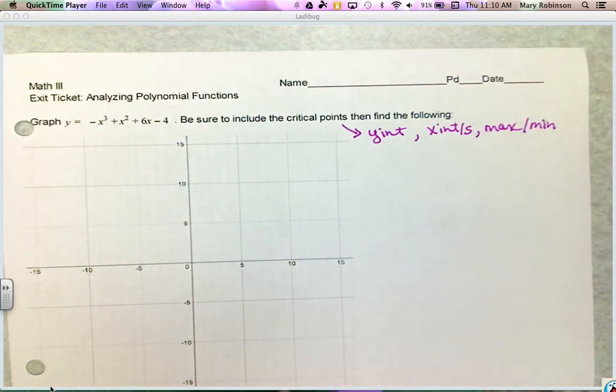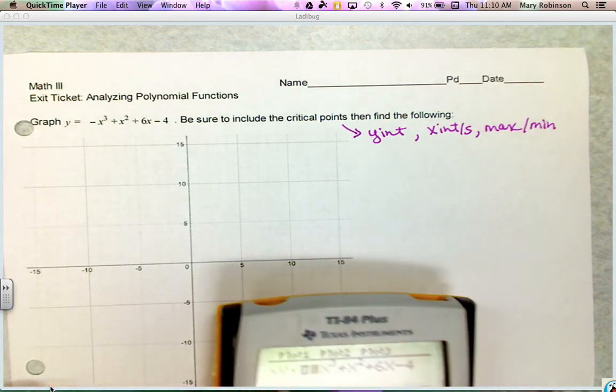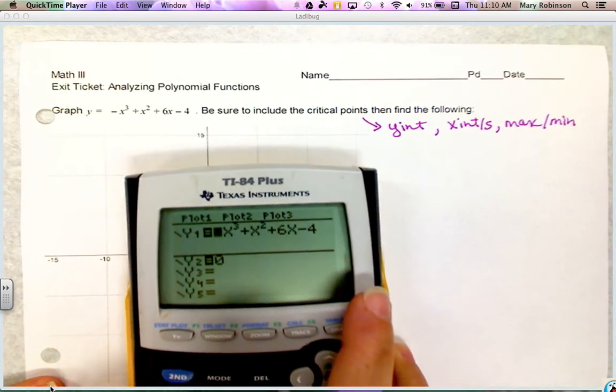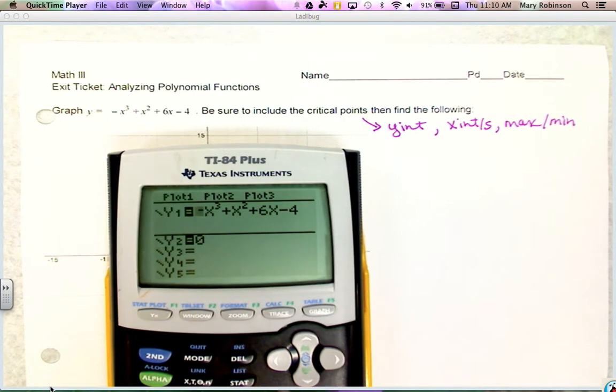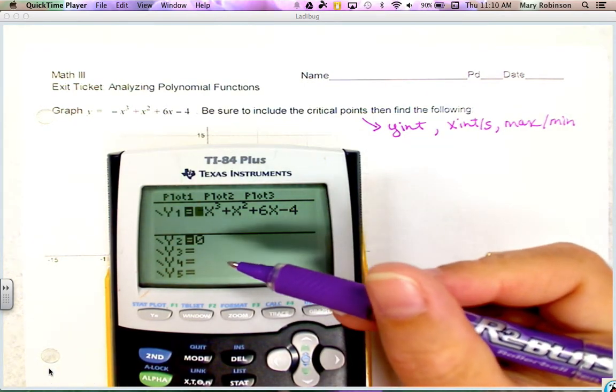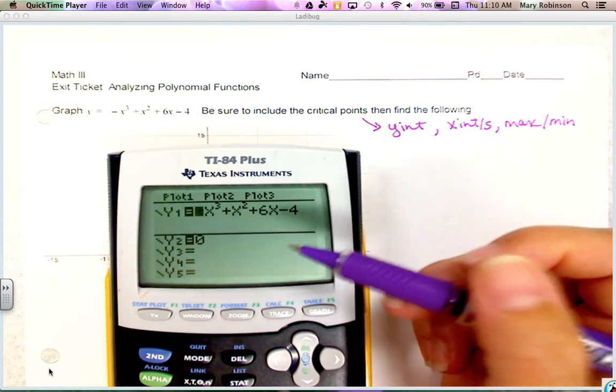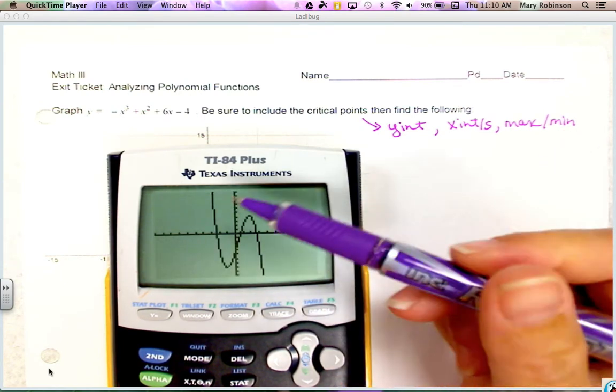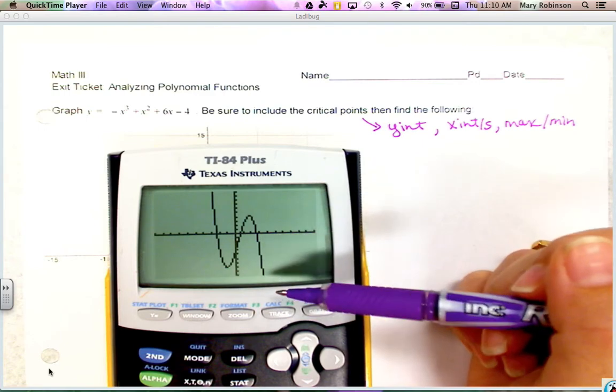The first thing I'm going to do to see what this graph looks like is either use my graphing calculator or go to desmos.com and type in our function. Here I have our cubic polynomial. I would then also, because I'm finding zeros, put zero in for y2 so that I can calculate their intersection.